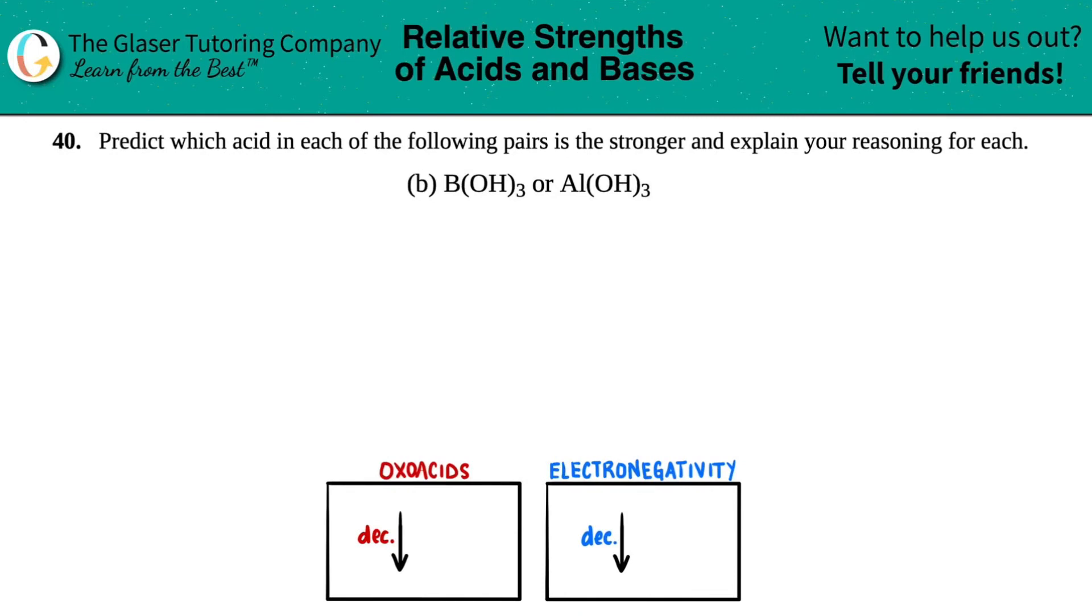Number 40, predict which acid in each of the following pairs is the stronger one and explain your reasoning for each. And then we have letter B. So in this case, we have boron with three OHs versus aluminum with three OHs. Which compound is going to be more acidic?